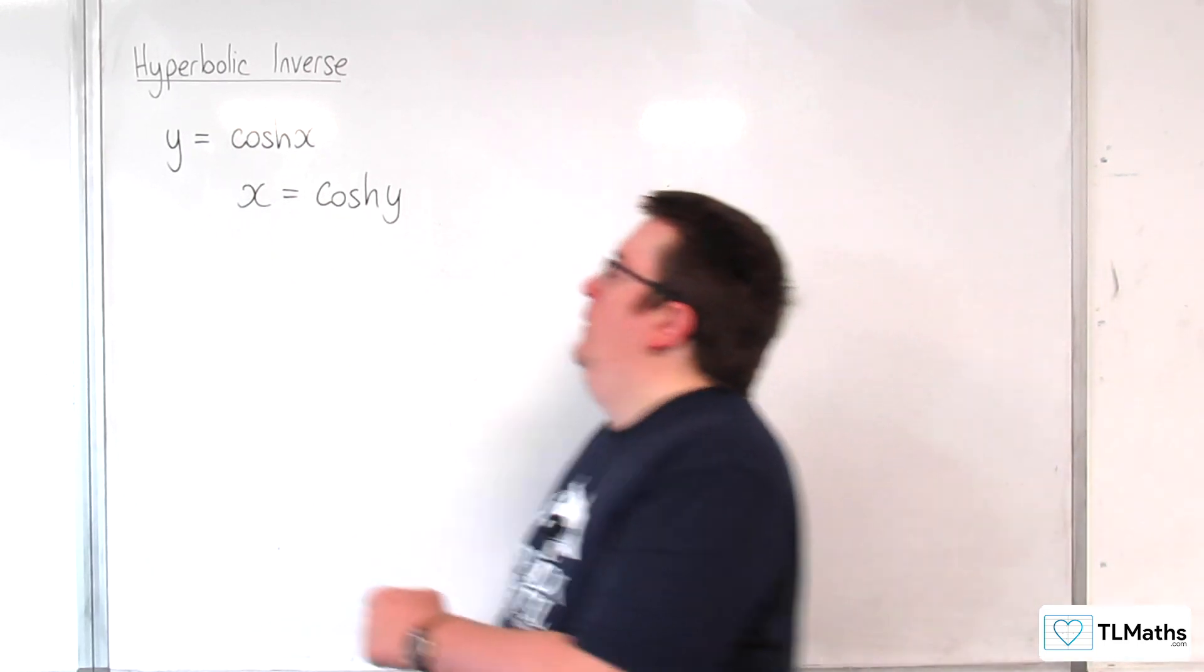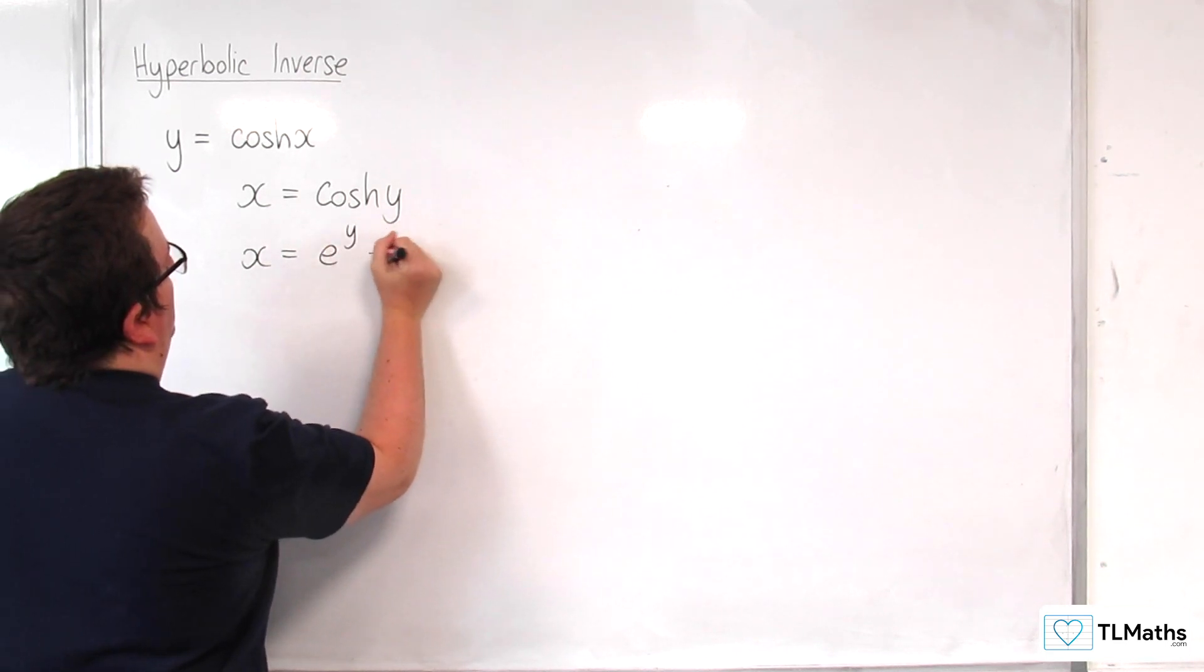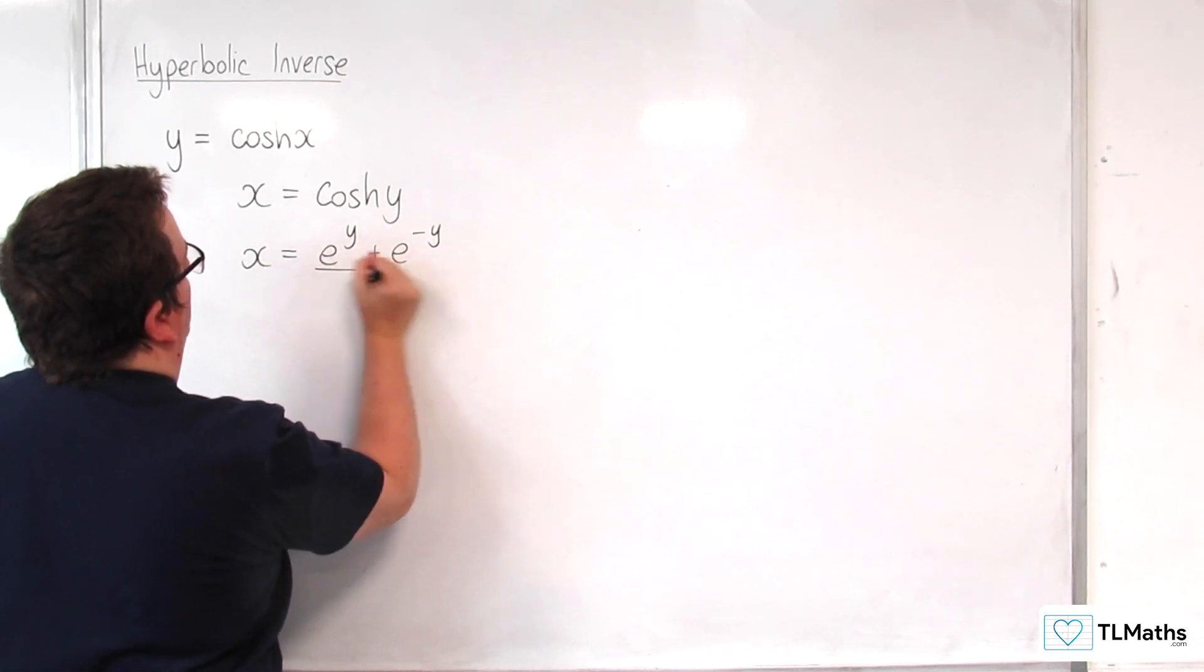That's what we want. So we can then write x as being equal to e to the y plus e to the minus y over 2.